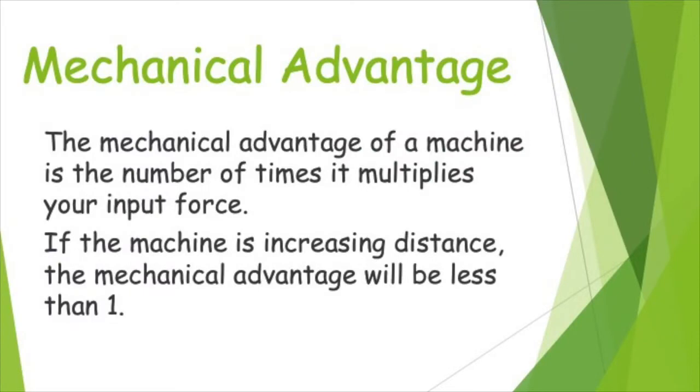Now that we've seen two examples of how machines can either increase or decrease the amount of force you put into them, we need to talk about mechanical advantage. Now, mechanical advantage is a number which tells us the number of times a machine multiplies your input force. So if the machine is increasing your distance and decreasing your force, that means that that mechanical advantage number is going to be less than one.